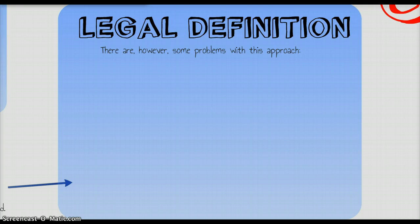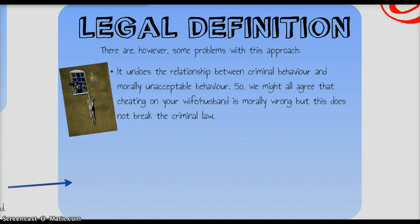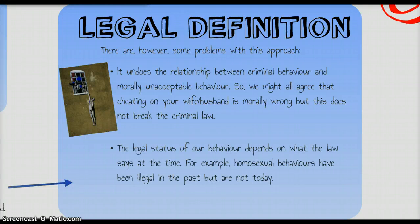But the legal definition also has some problems. It undoes the relationship between criminal behaviour and morally unacceptable behaviour. Most people would agree it's morally unacceptable to cheat on your wife or husband, but we can't make that a crime in the legal sense because the courts would be overrun — it happens too often in our society. There's also an issue around whether the legal status of behaviour changes over time. It was once a crime to engage in homosexual behaviours; it isn't any longer. Should crime be something that changes over time?